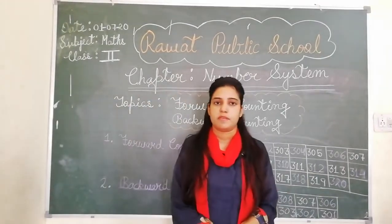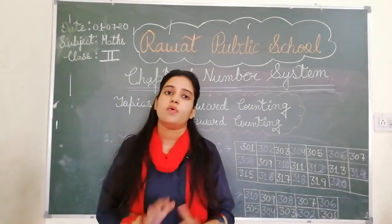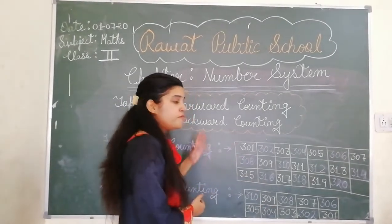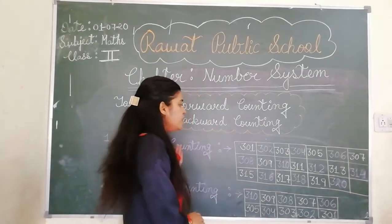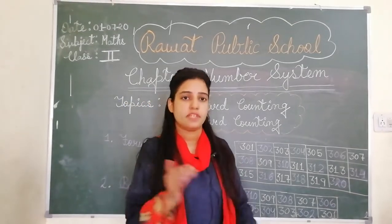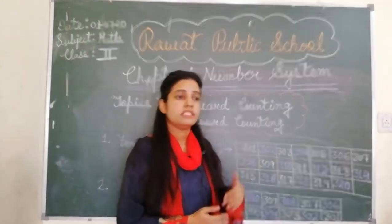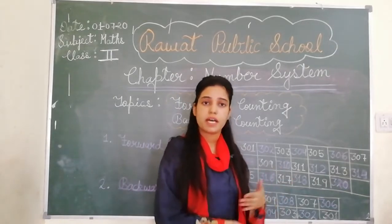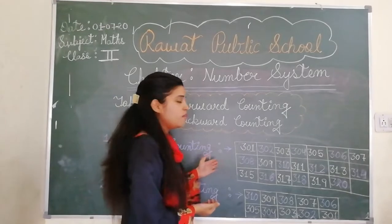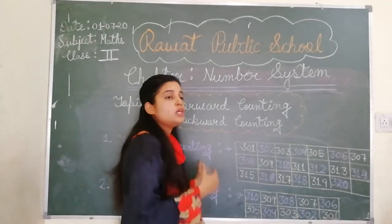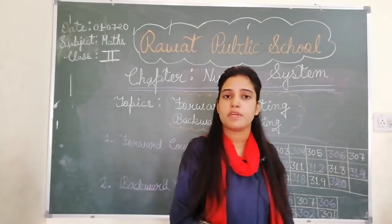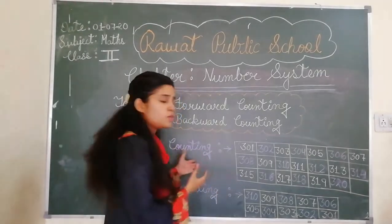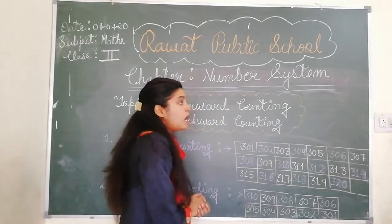Forward Counting का means क्या होता है? Forward Counting का means — कोई भी ऐसी counting जिसमें हम आगे वाला next number लिखते हैं। जो normally हम जैसे 1 to 100 करते हैं, जो आपने 1st class में भी सीखी होगी, उसमें आप next number choose करते हो। जैसे 1 के बाद 2 आता है, 100 के बाद 101 आता है। तो next number जिसमें हम write down करते हैं, वो forward counting होती है।